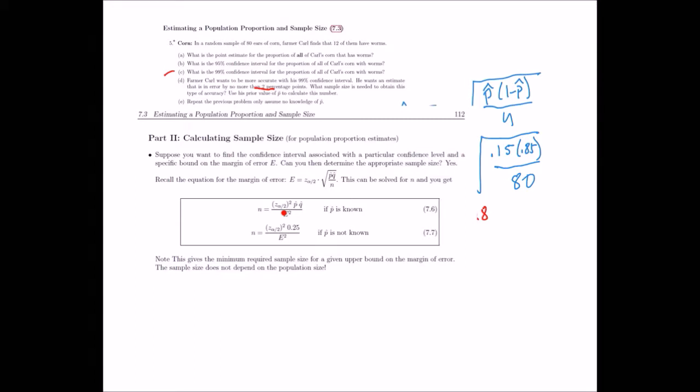For the numerator, once I calculate that, I'm getting 0.8454. Now I'm going to divide that by 0.02 squared, which is 0.0004. And now I'm going to divide those two, and that's telling me 2,113.5. But in order to get a big enough sample, we're going to round up to 2,114.